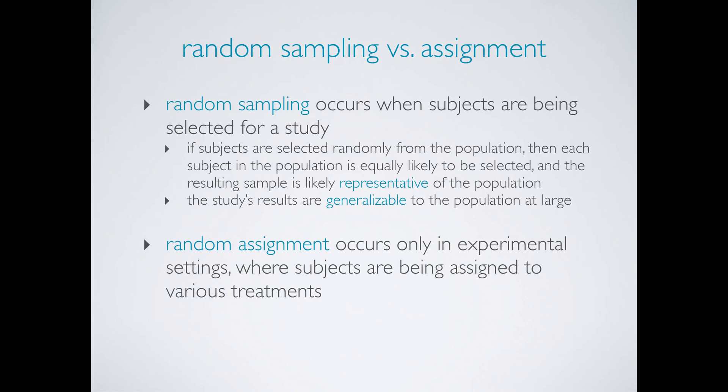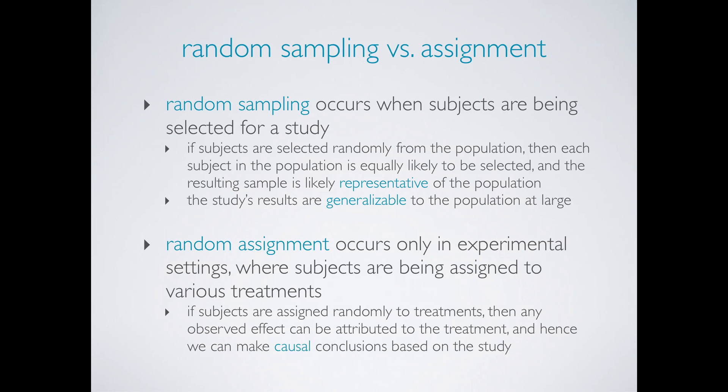Random assignment on the other hand occurs only in experimental settings where subjects are being assigned to various treatments. If subjects are assigned randomly to treatments then any observed effect can be attributed to the treatment and hence we can make causal conclusions based on the study.